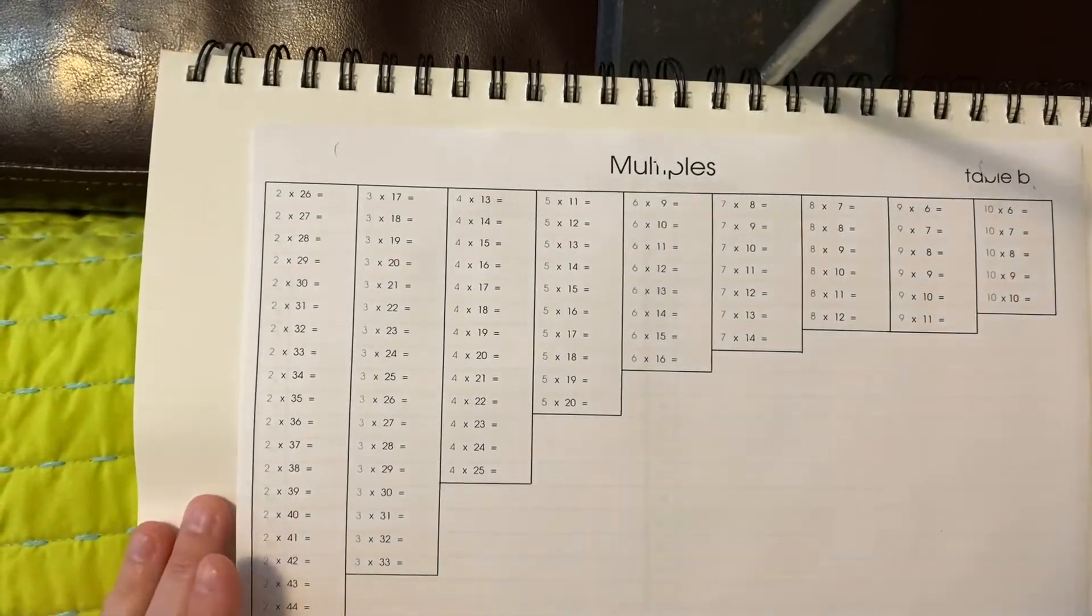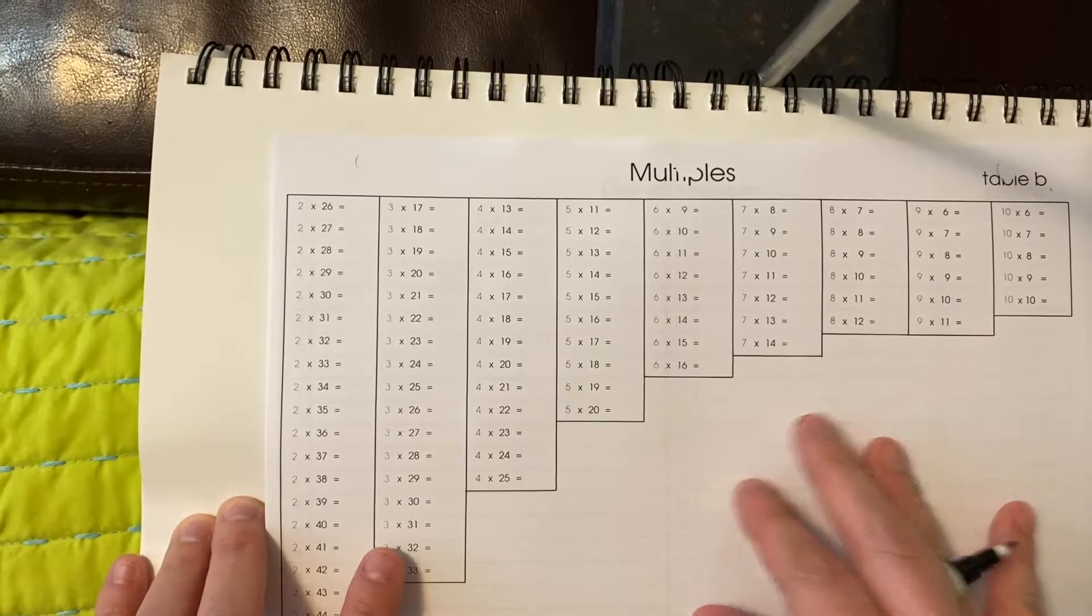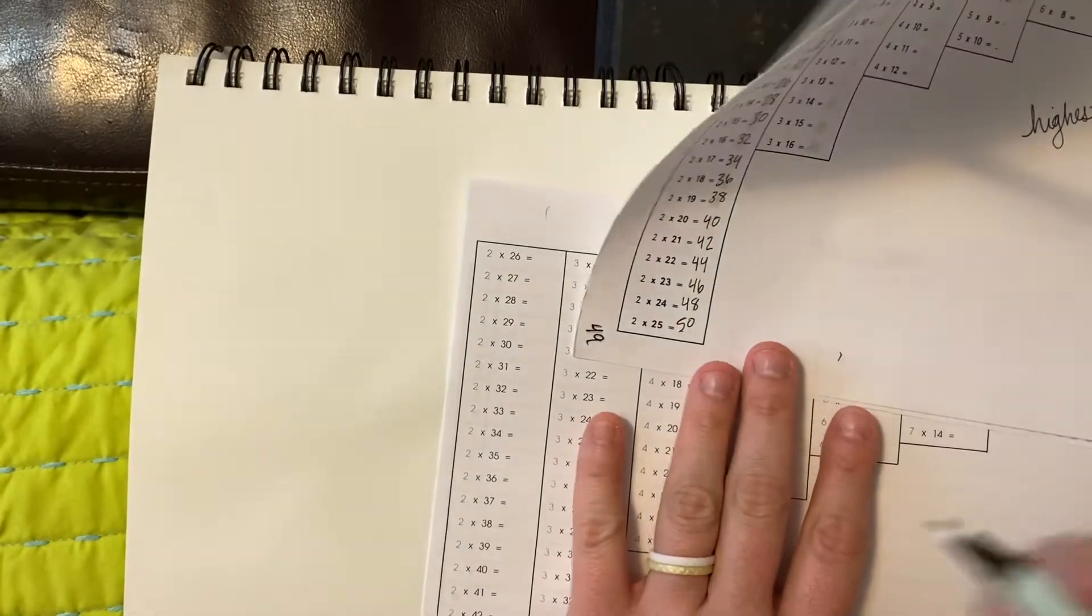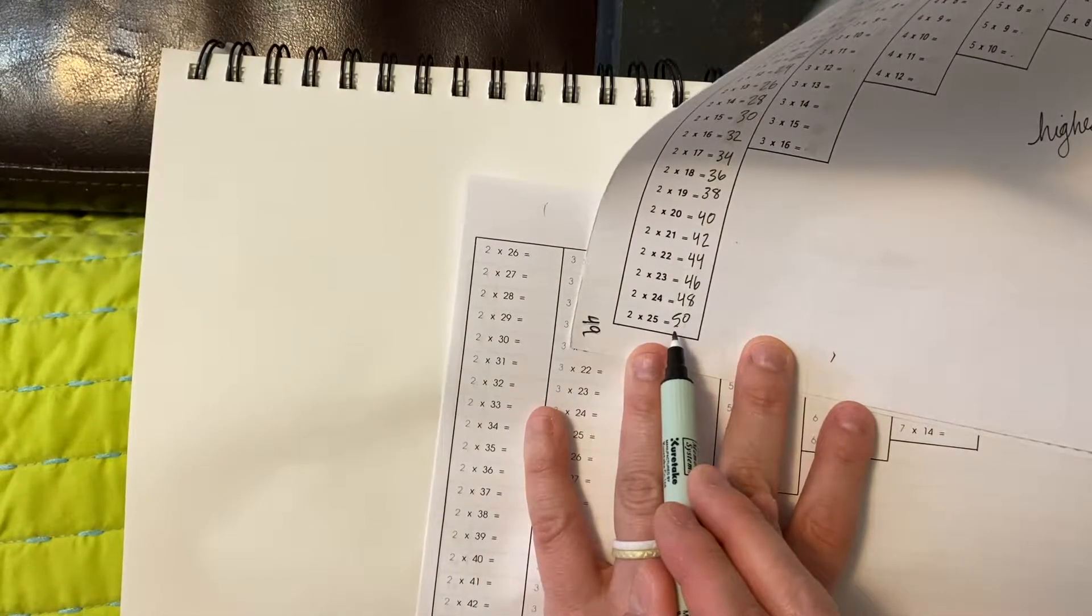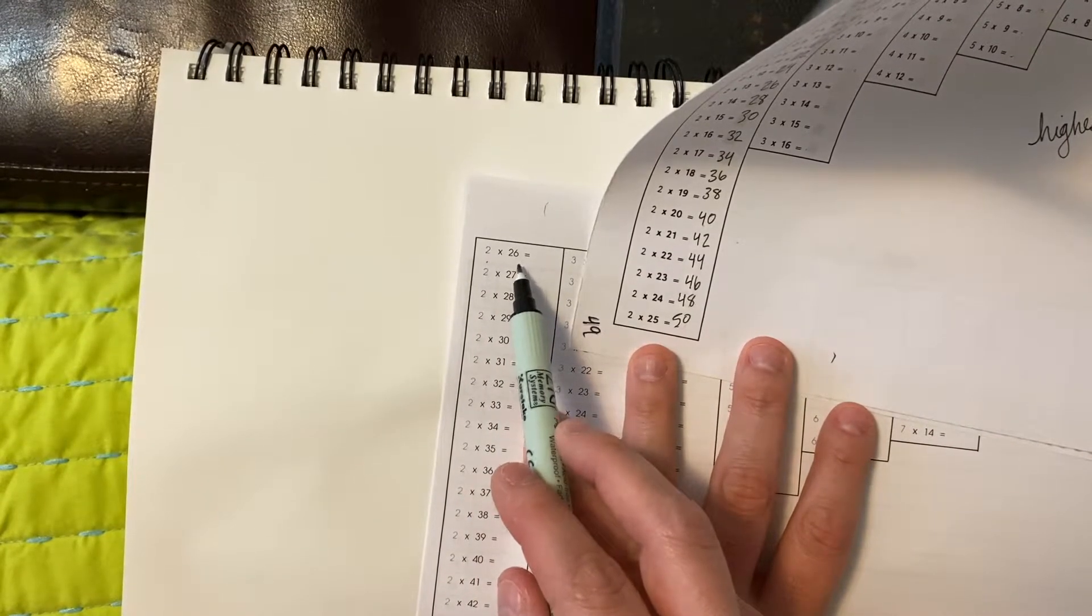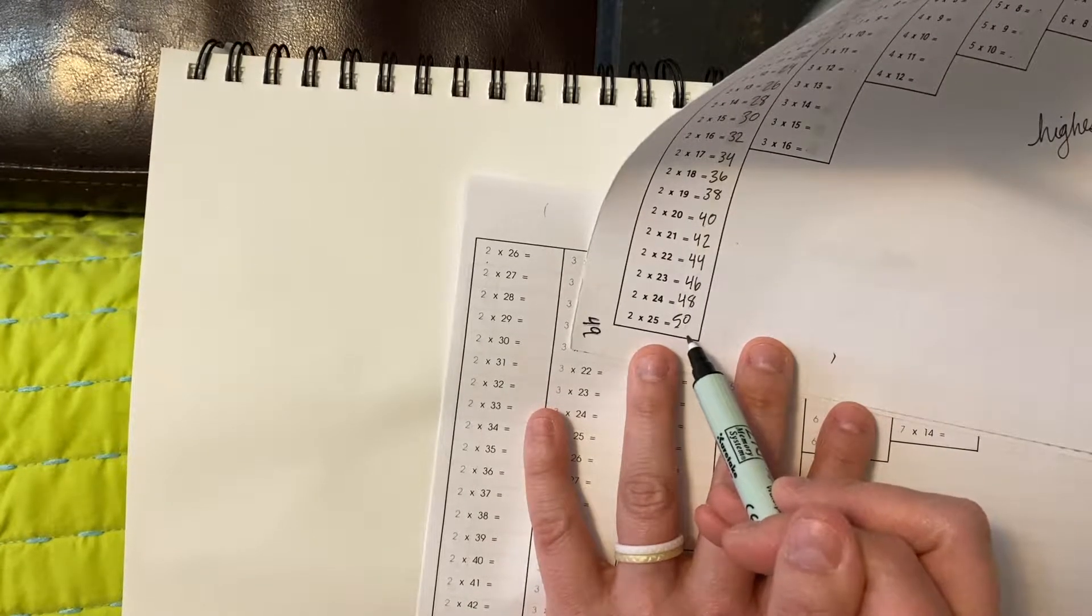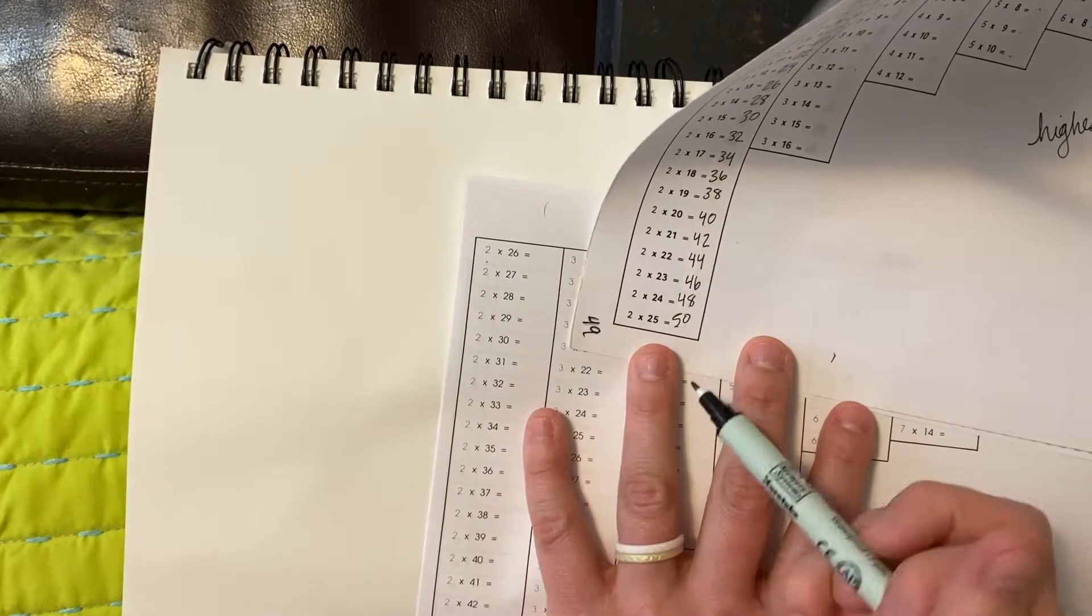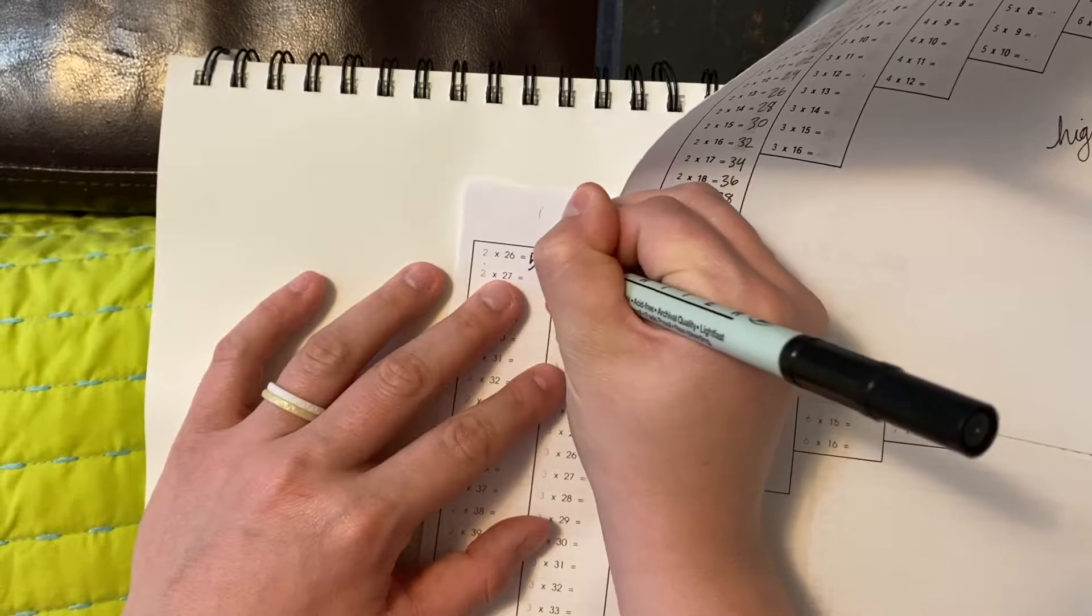Now let's take a look at table B. Table B is just a continuation of table A. If we look at table A, it ended with 2 times 25, which was 50. Well, table B starts with 2 times 26, which is just 2 more than this one here, which would be 52.